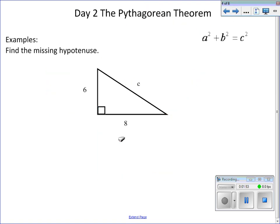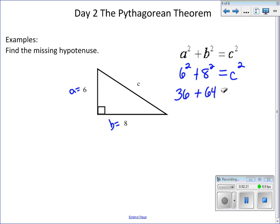Let's look at our first example. This would be our A, this would be our B. We're going to plug it into our formula. We're going to get 6 squared plus 8 squared, and that equals C squared. 6 squared is 36, 8 squared is 64, and that equals C squared.